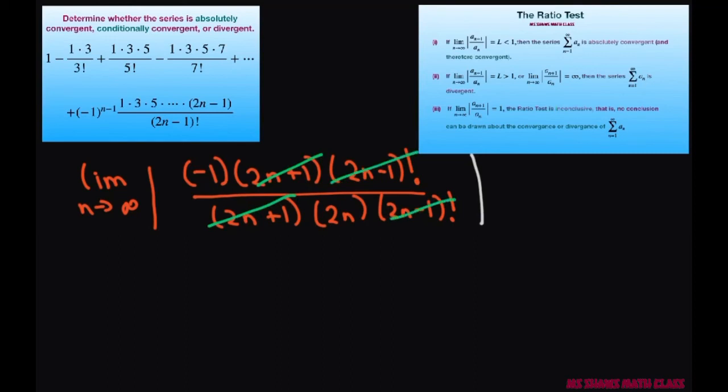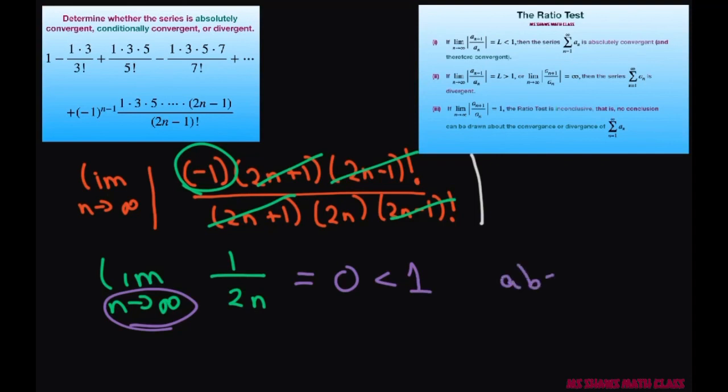So what we're going to get is the limit as n approaches infinity of, and you take the absolute value of negative 1, you get 1 divided by 2n. Now, as we apply the limit, this is going to go off to 0, which is less than 1. So this is absolutely convergent.